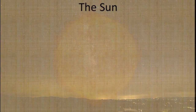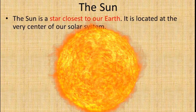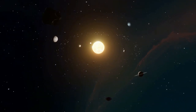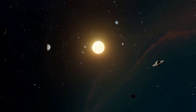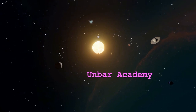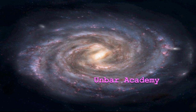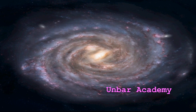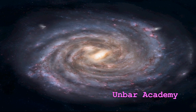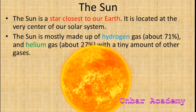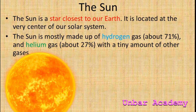The Sun is a star closest to our Earth. It is located at the very center of our solar system. The Sun is mostly made up of hydrogen gas, about 71%, and helium gas, about 27%, with a tiny amount of other gases.